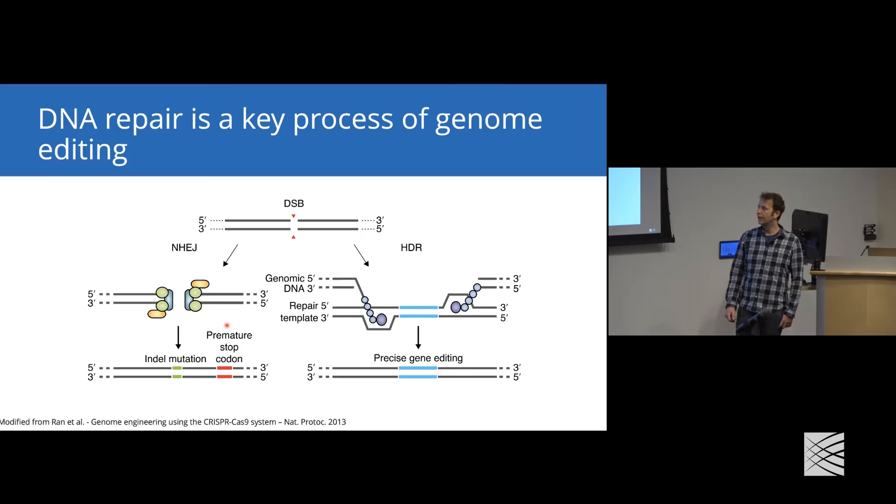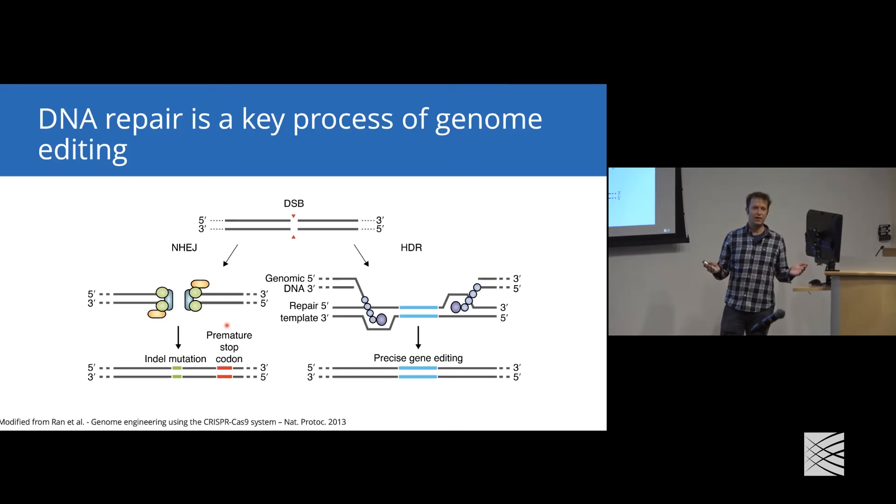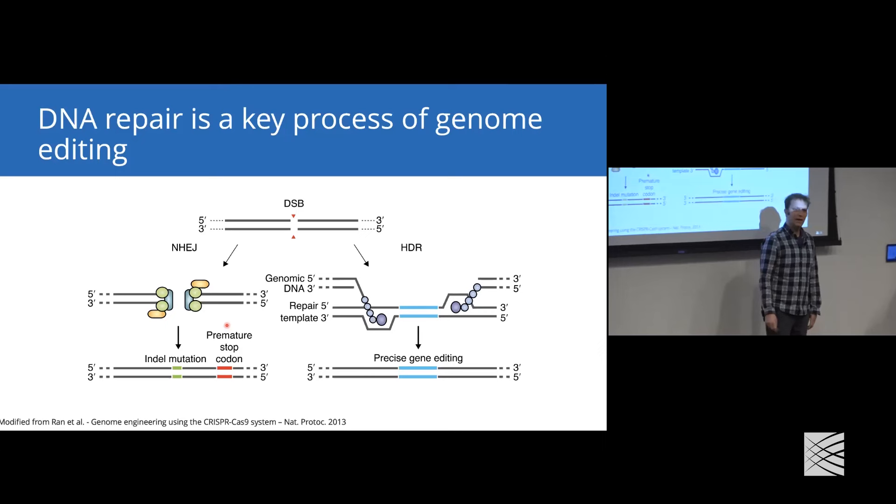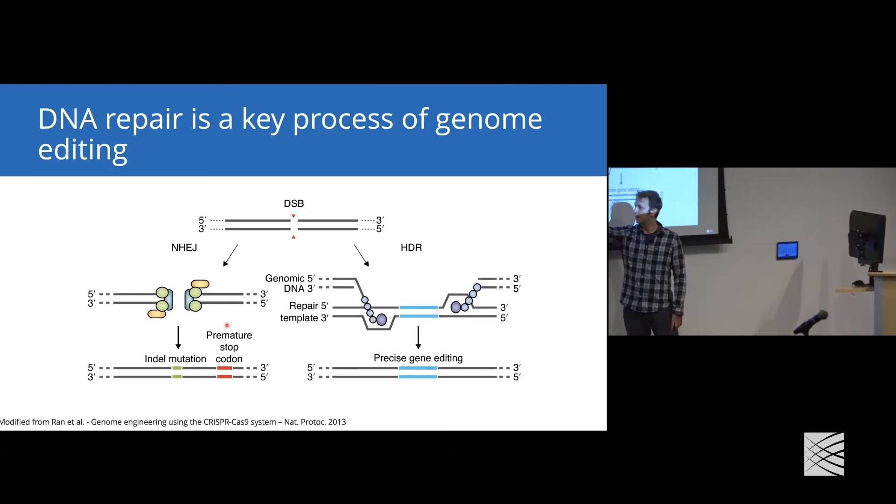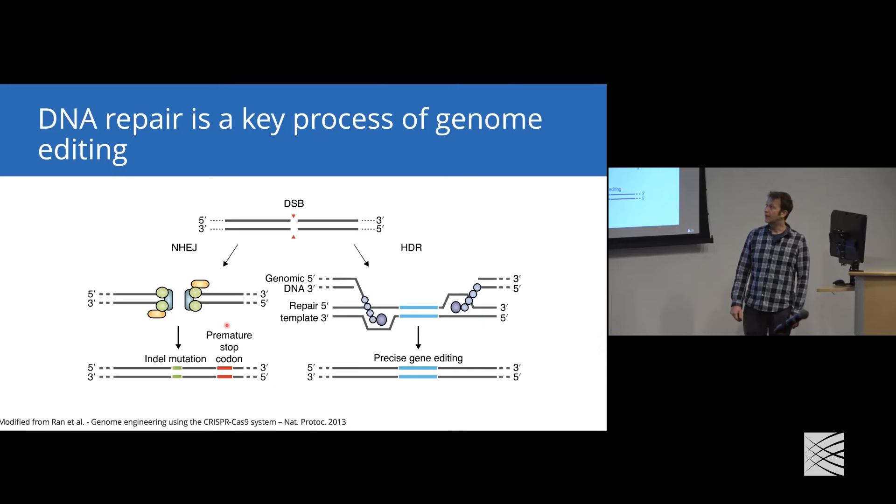NHEJ uses DNA-binding enzymes to make small resections of the ends and literally just fuses them back together. This is why NHEJ is an error-prone DNA repair pathway which can lead to the formation of insertions and deletions, or indels. If an indel occurs in the coding sequence of a gene, we can introduce premature stop codons. Using NHEJ would potentially allow us to delete genes.